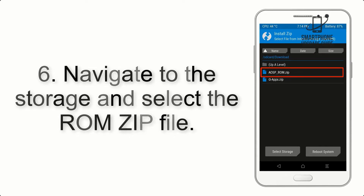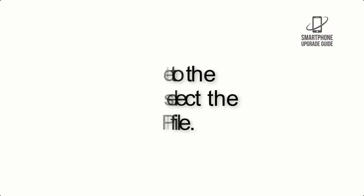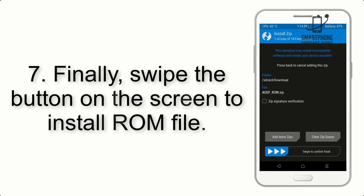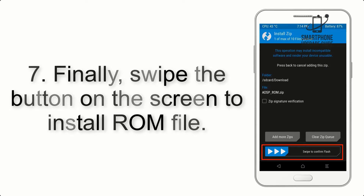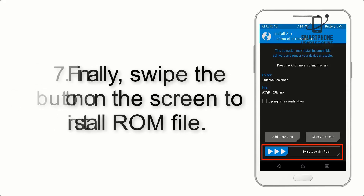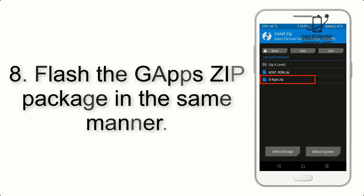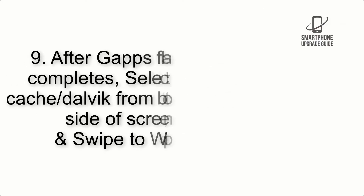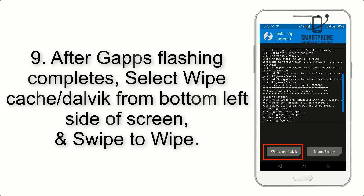Step 5: Go back to the recovery main screen and tap on the Install button. Step 6: Navigate to the storage and select the ROM zip file. Step 7: Finally, swipe the button on the screen to install the ROM file.